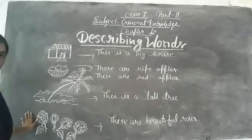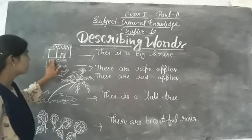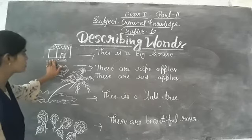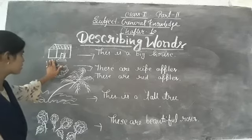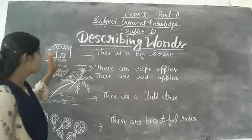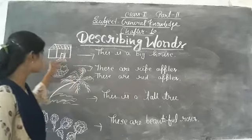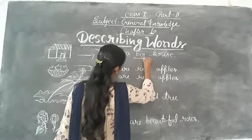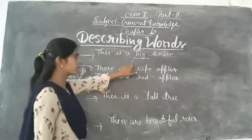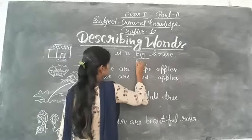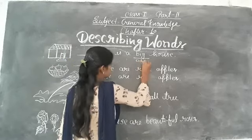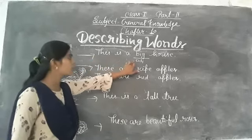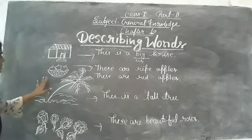Firstly, look at this picture. What is this? This is a house. But I want to ask a question — how is this house? This is a big house. Because 'big' is the adjective here. Big describes the house, so 'big' is an adjective.